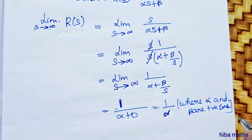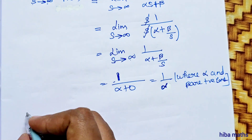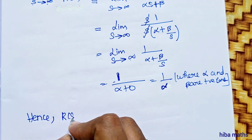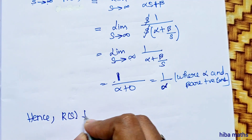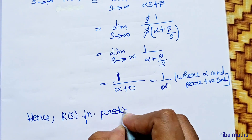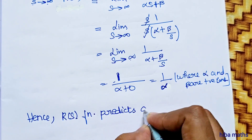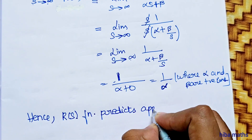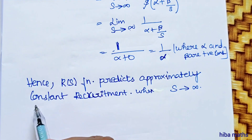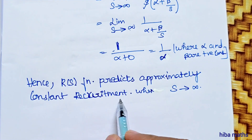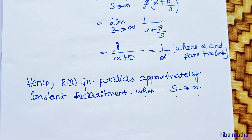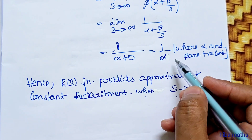Hence, r(s) predicts approximately constant recruitment when s tends to infinity, i.e., when the number of spawners is sufficiently large.